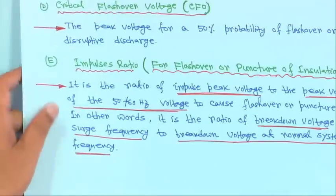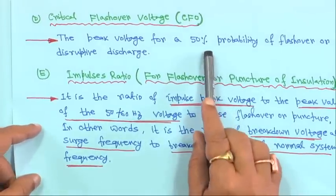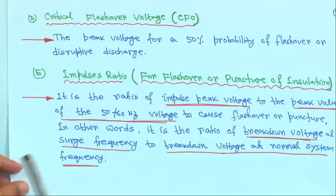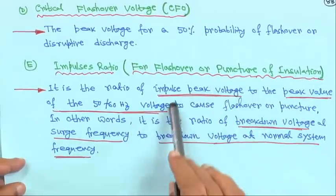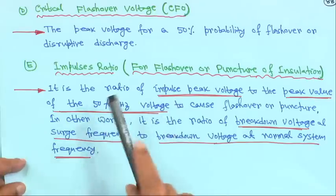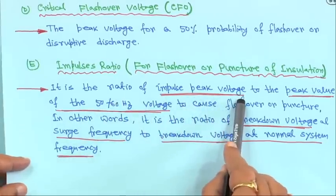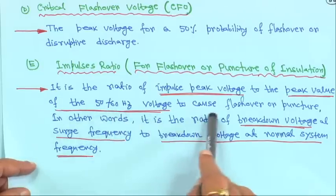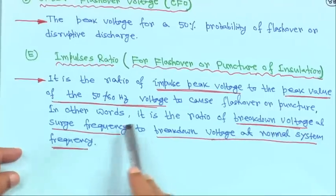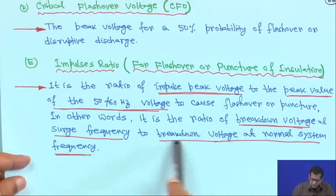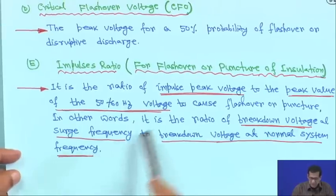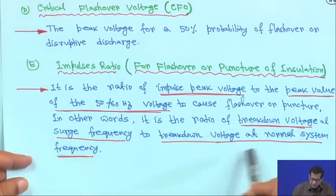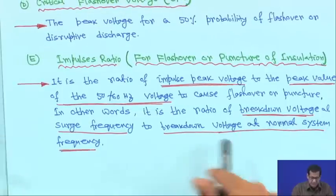The Critical Flashover Voltage, or CFO, is the peak voltage for a 50 percent probability of flashover or disruptive discharge. The impulse ratio for flashover or puncture of insulation is the ratio of the impulse peak voltage to the peak value of the 50 or 60 Hz voltage that causes flashover — in other words, the ratio of breakdown voltage at surge frequency to breakdown voltage at normal system frequency.